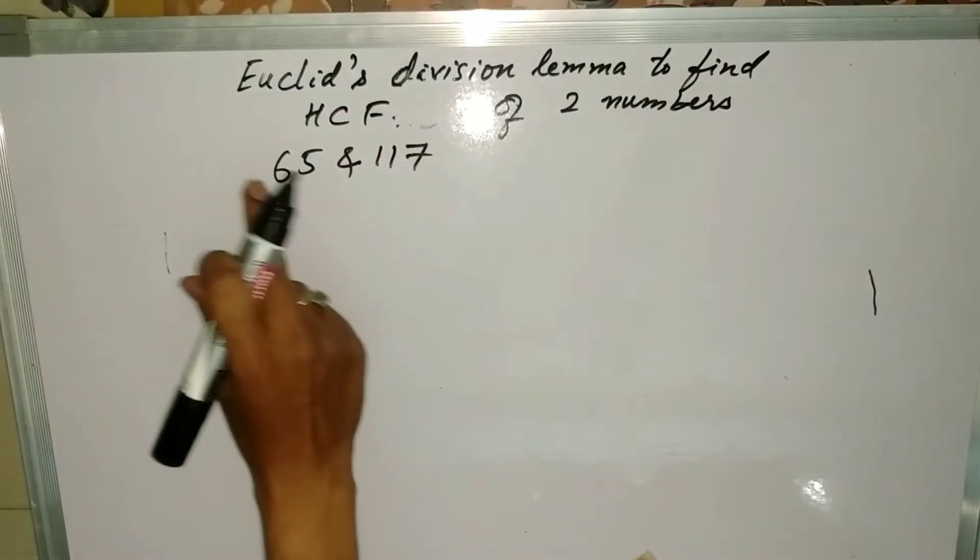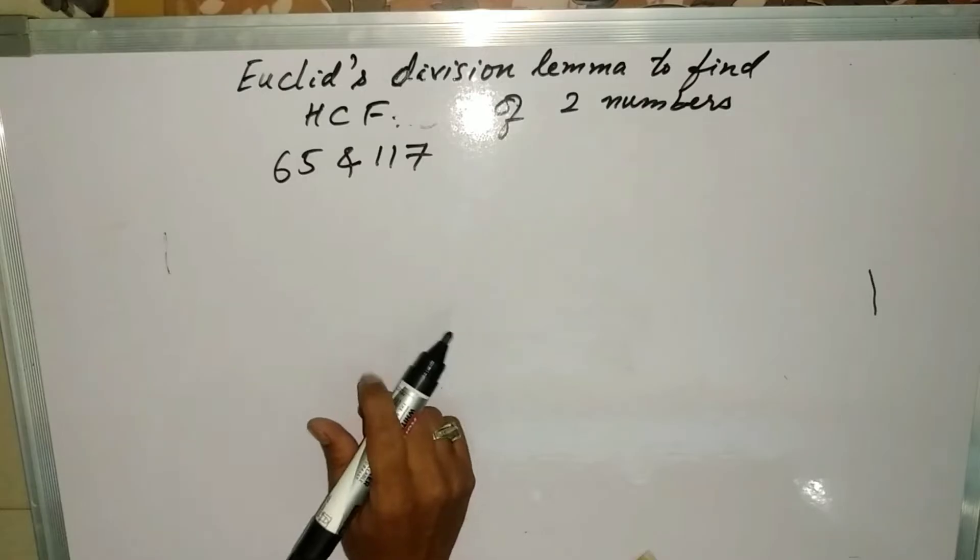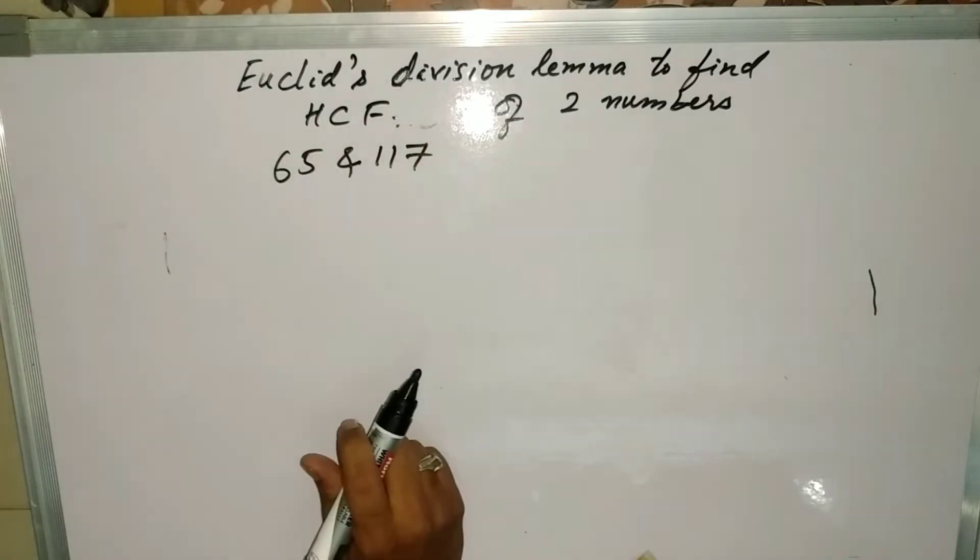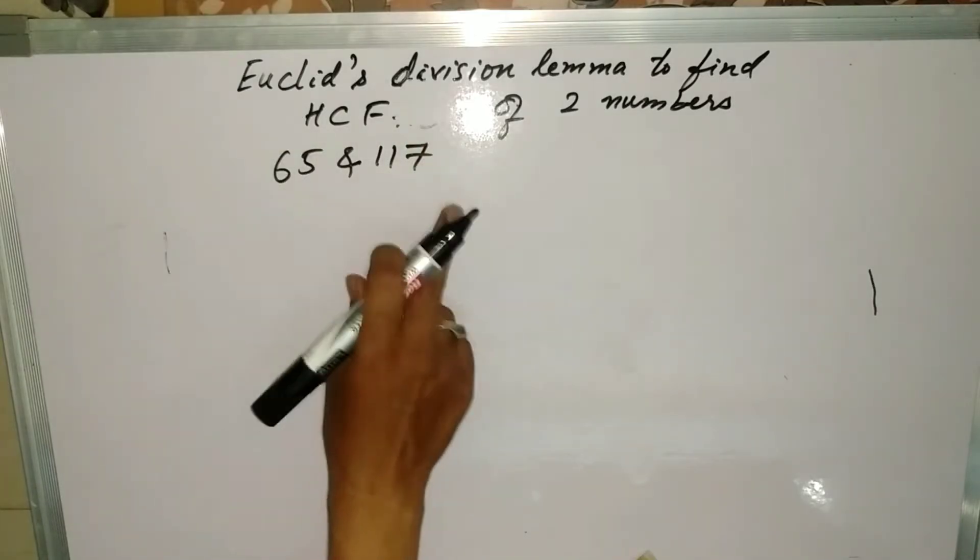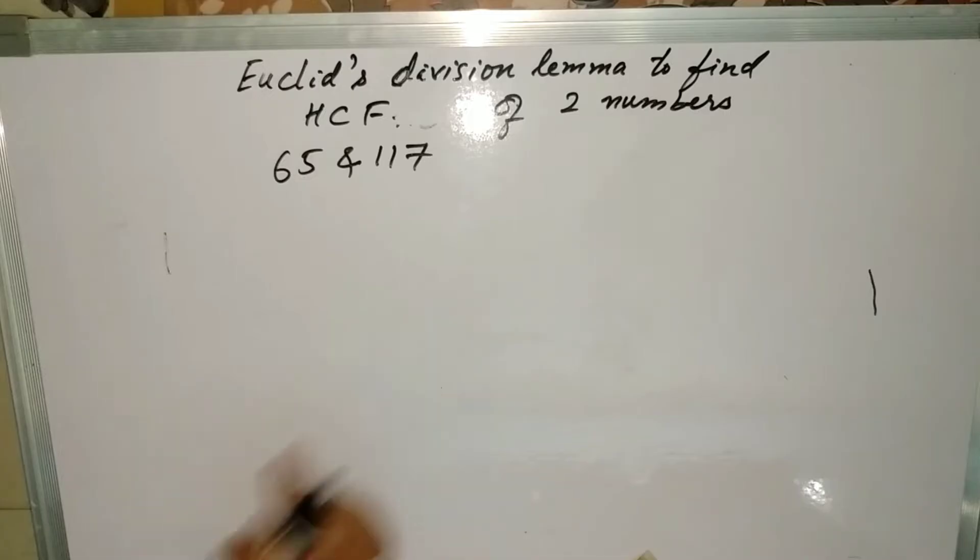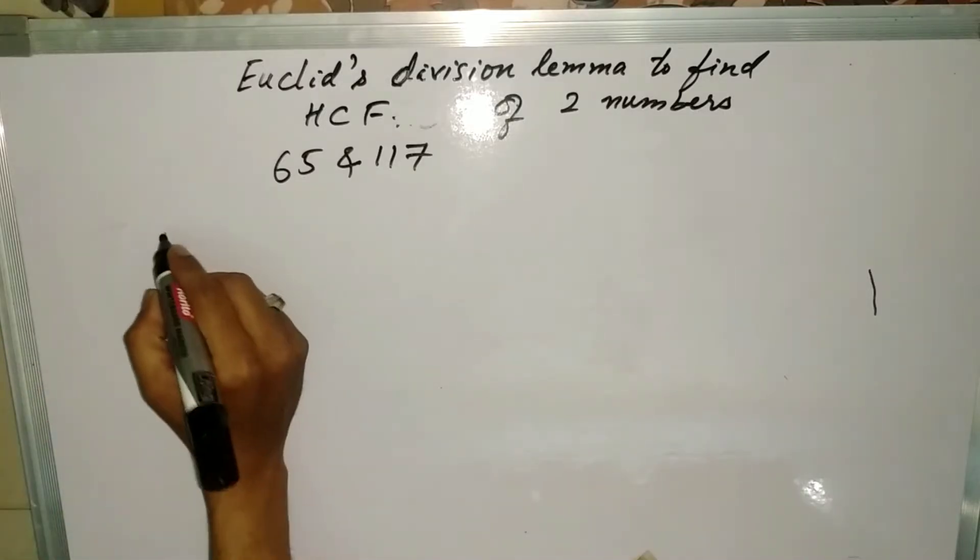Hello friends, today we are going to see how to find the HCF of two numbers using Euclid's division lemma. We have the two numbers 65 and 117 whose HCF we need to find.